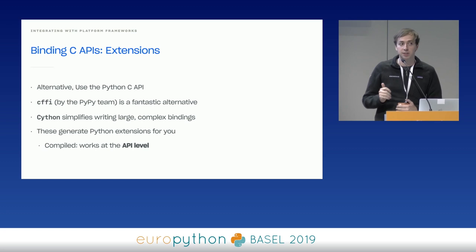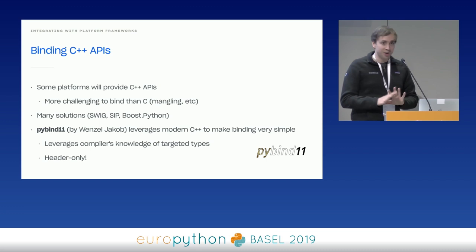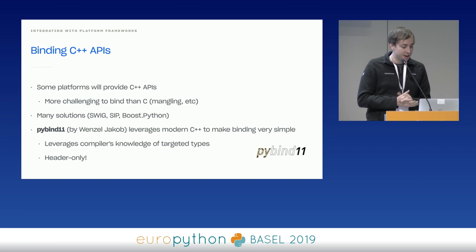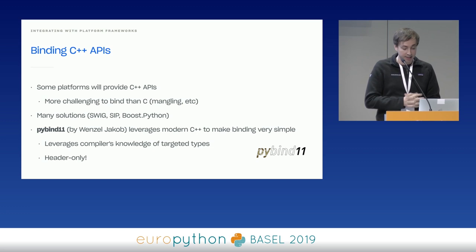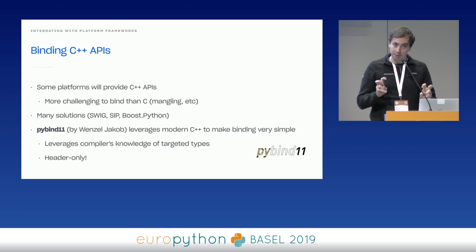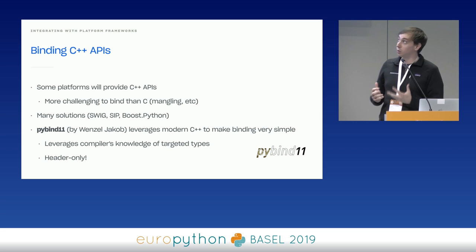A quick honorable mention for Cython — it's really, really great. We use a lot of CFFI, mostly because we don't need the complexity that Cython gives us the ability to deal with most of the time. That covers C, but that's nowhere near the end of the story. Many platforms actually have non-C APIs — some have C++ APIs. These are quite common, but binding C++ is much harder than binding C, because C++ is very complex. Things like name mangling, templates, etc. — it has a stable ABI but is quite complex.